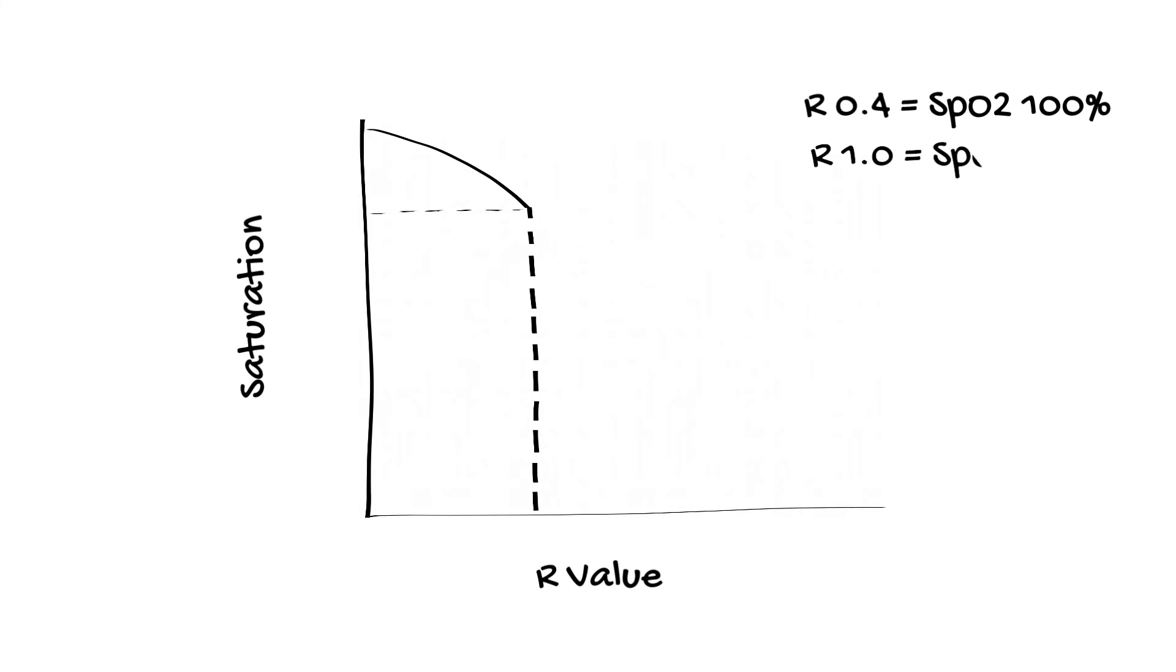We then combine these ratios for both 660 nanometer and 940 nanometer light into another ratio termed the R value. Once the computer has calculated the R value, it then converts the R value into an oxygen saturation level obtained from experimental data where healthy volunteers breathed hypoxic gas mixtures.